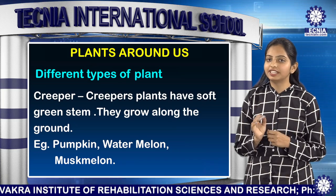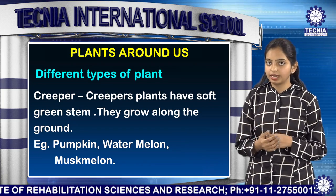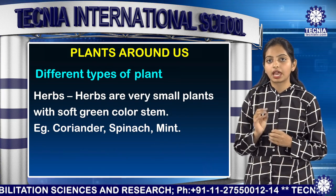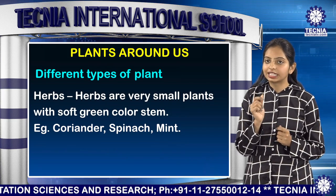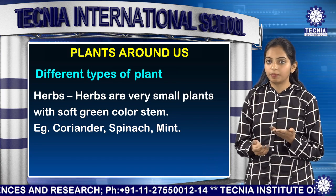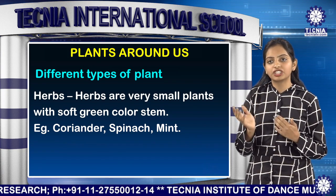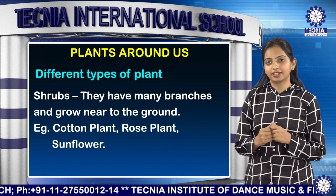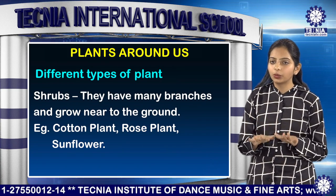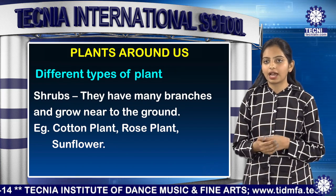Creepers also have weak stems, so they grow near the ground — like muskmelon, pumpkin etc. Herbs have green and soft stems like coriander, mint etc., and we use them in our vegetables also. Shrubs on the other hand have many branches and they grow near the ground, like cotton plant, rose plant etc.